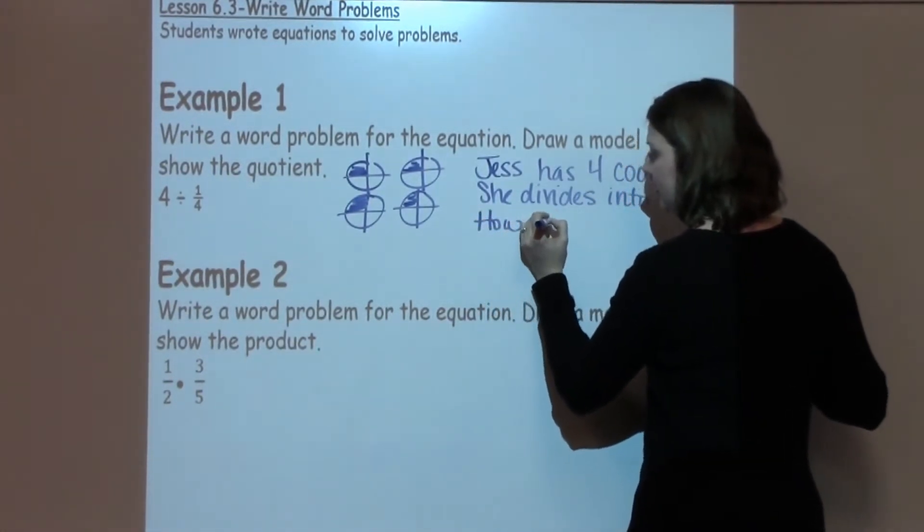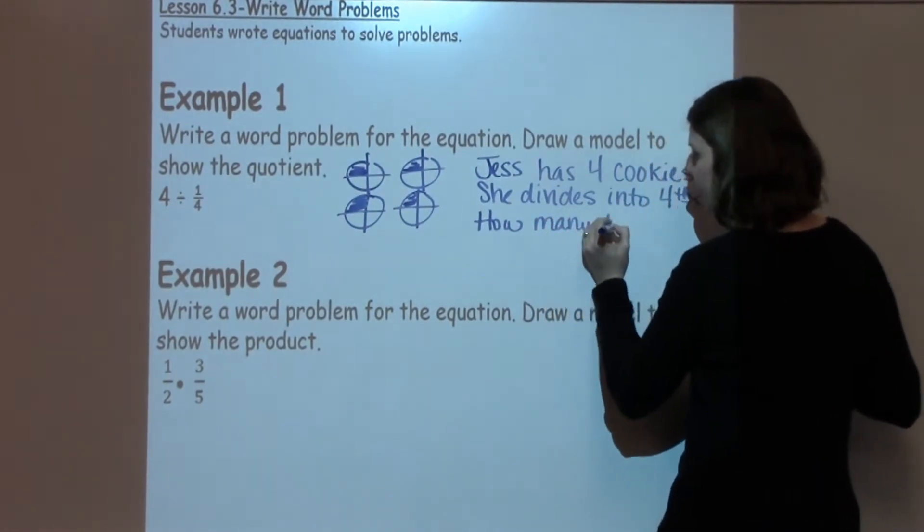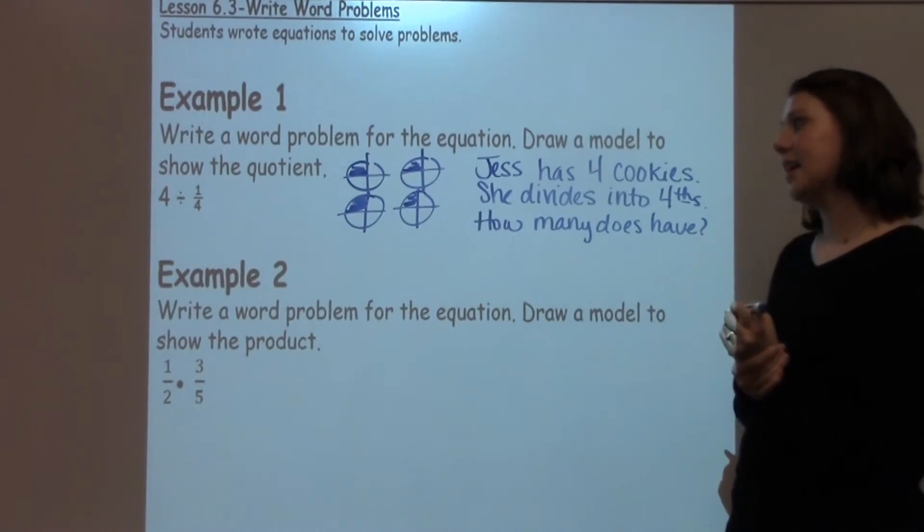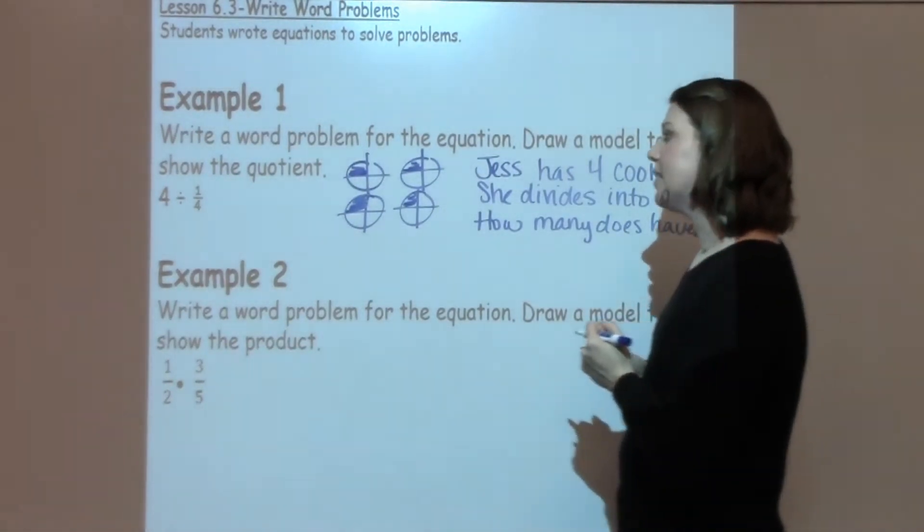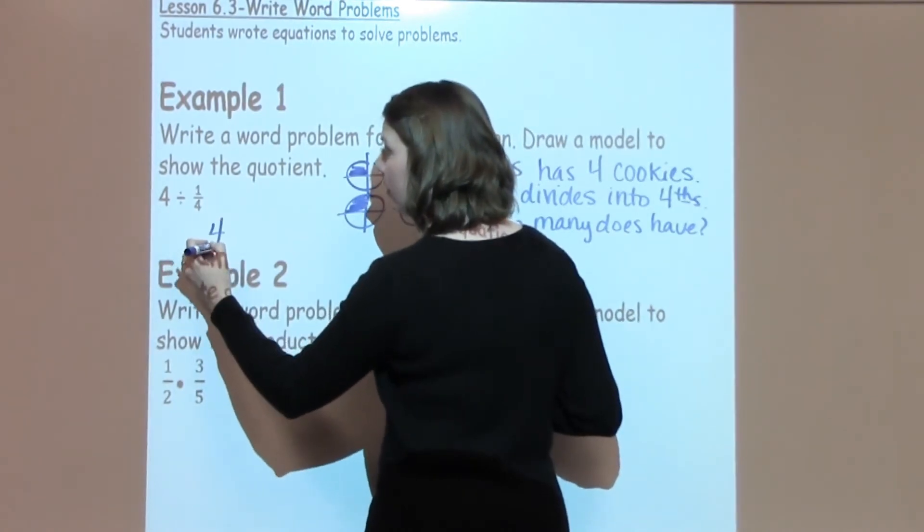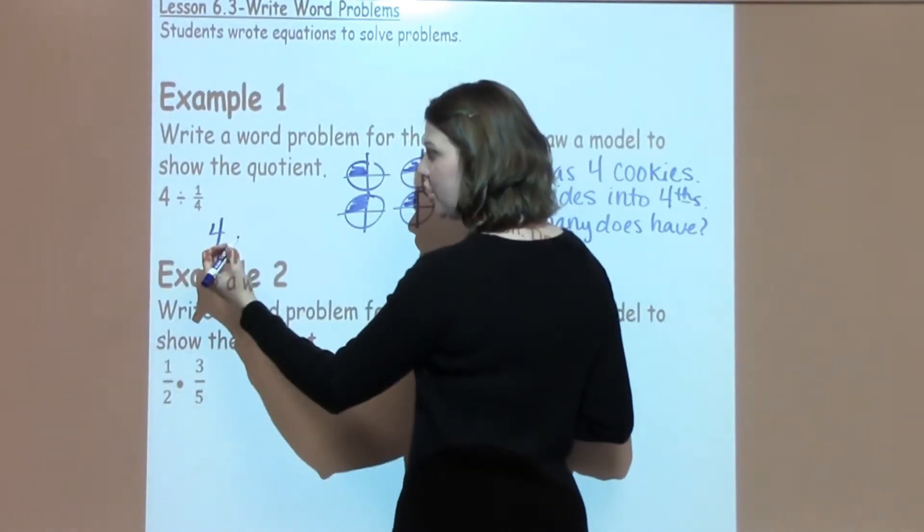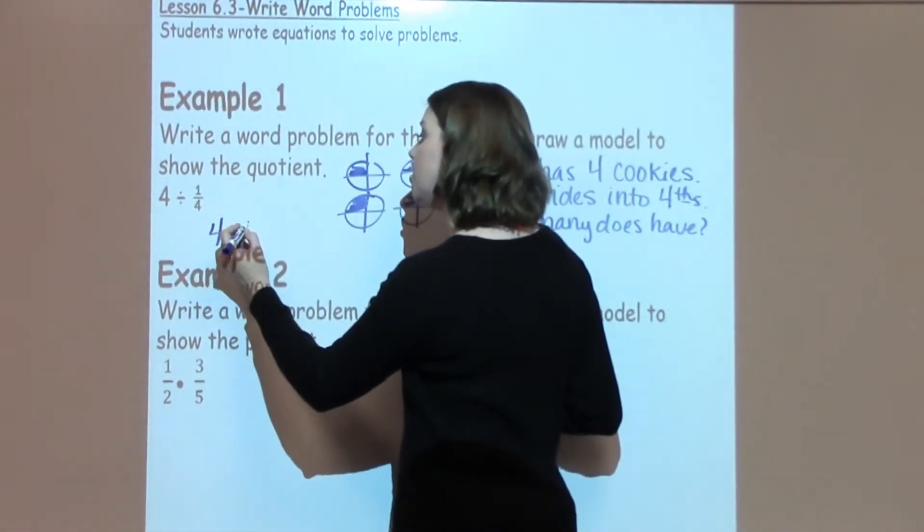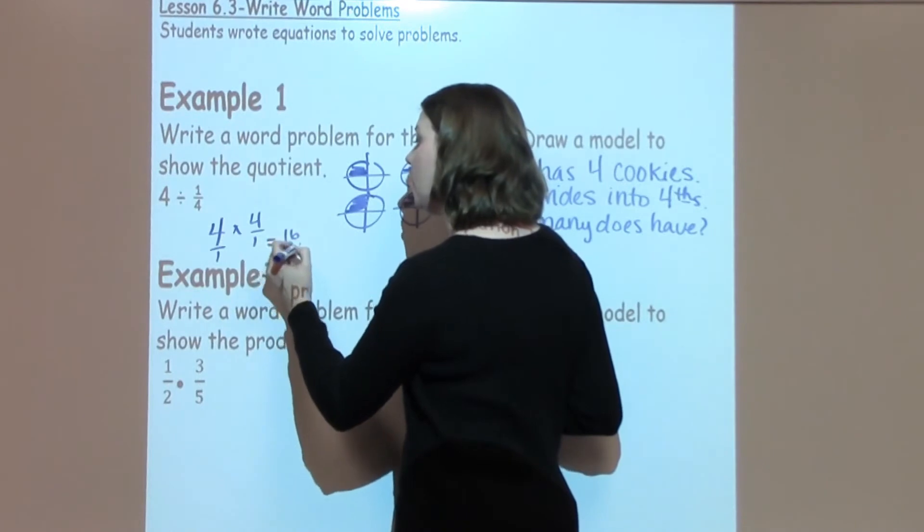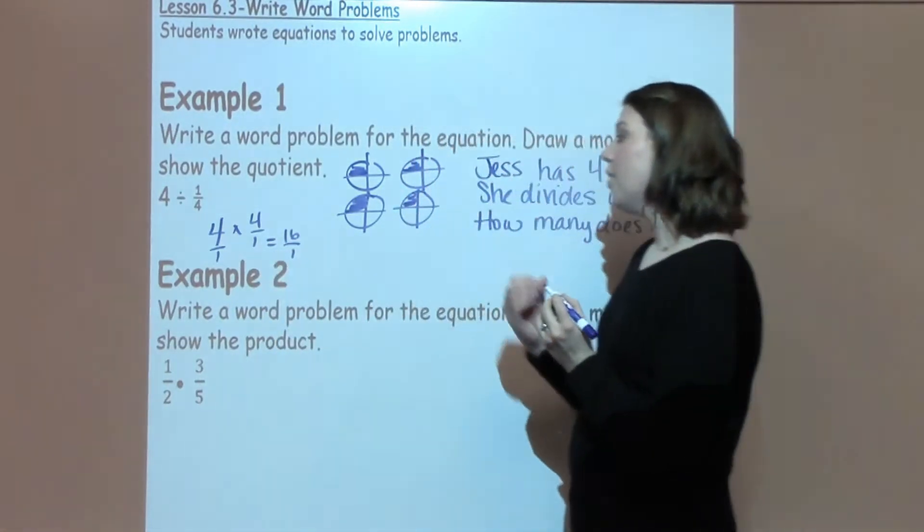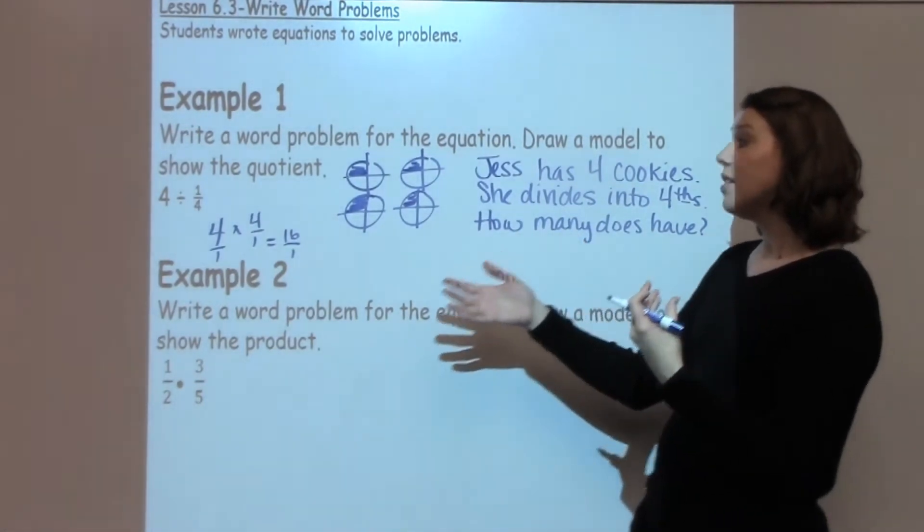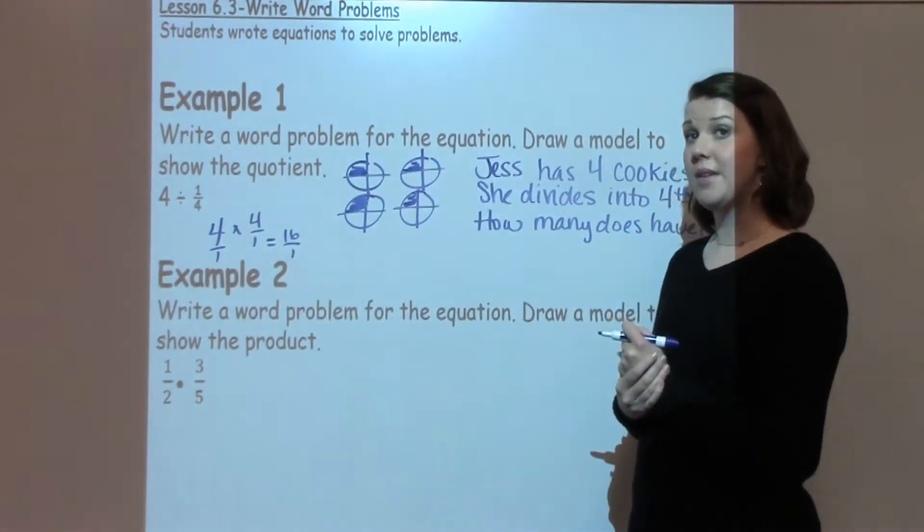When I think about this, I can go ahead and take a second and think how many fourths does she have? When I look at this, if I go ahead and solve this question, I'd have to go ahead and do my 4. Do my keep change flip with my normal division. So I'm going to do keep change, and then I'm going to flip. And I've got 16 over 1. When I look at this, how many fourths does she have? She's got 16 fourths from this example.